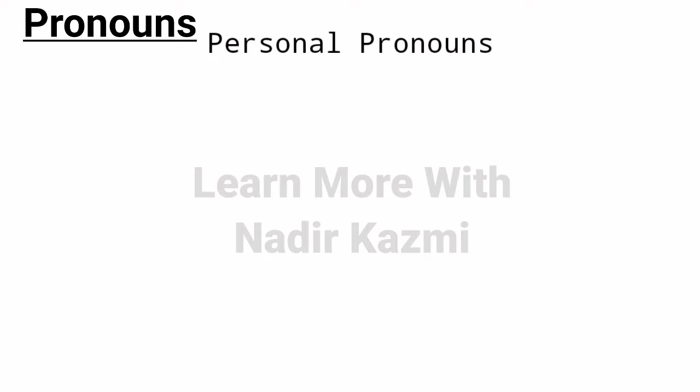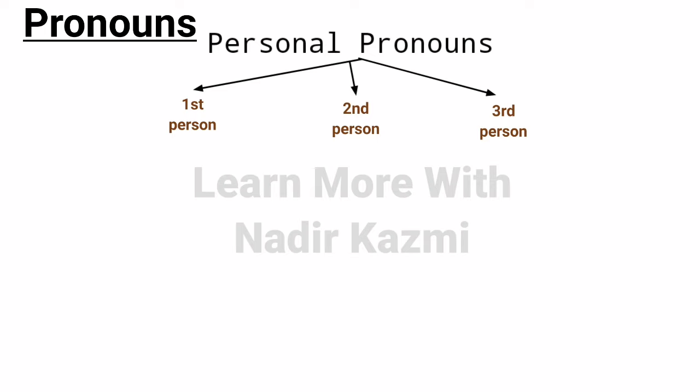The very first kind of pronoun is personal pronoun. We call it personal pronoun because it is used for three persons: first person, second person, and third person. First person pronouns are 'I' and 'we' — yeh woh hote hain jo baat kar rahe hote hain, meaning the person who talks is the first person. Whether speaking alone (I) or together with others (we).